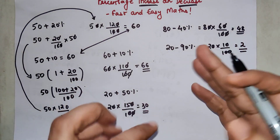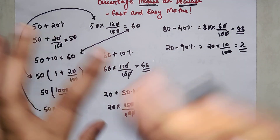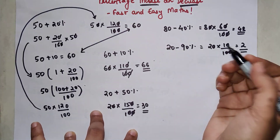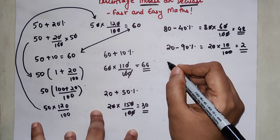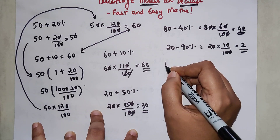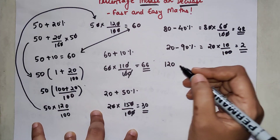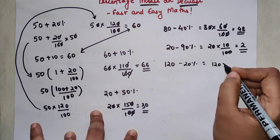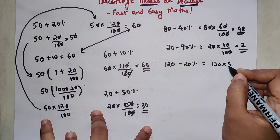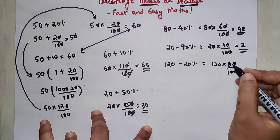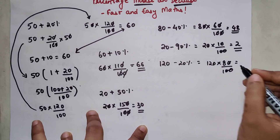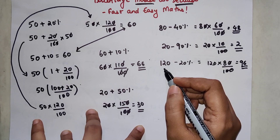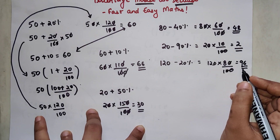This trick is very helpful for discounts too. Say you go to a shop and there is 20 percent off on a pair of jeans costing 120 dollars. You do 120 into (100 minus 20) upon 100, which is 120 into 80 upon 100. The zeros cancel, giving a final value of 96 — so the jeans that cost 120 will now cost you just 96 dollars.